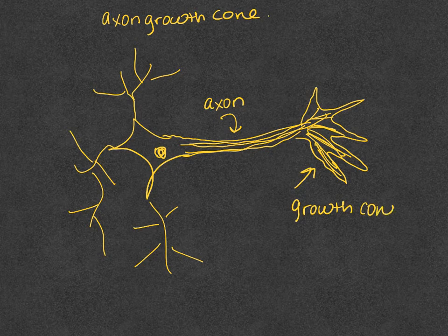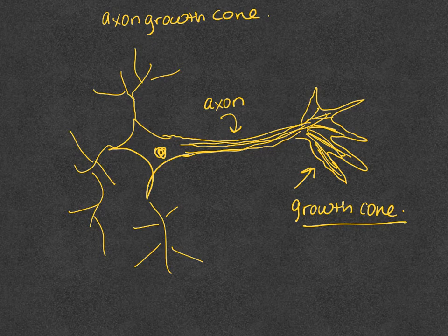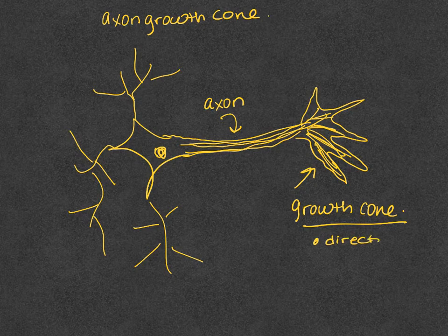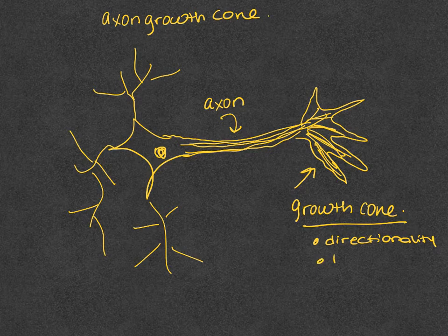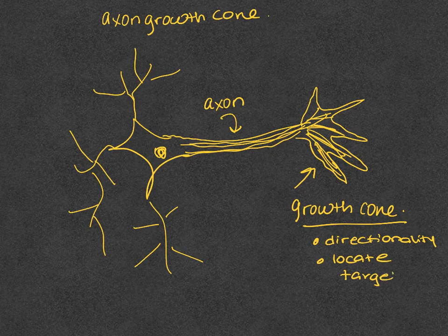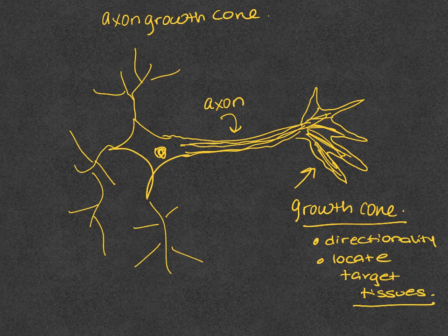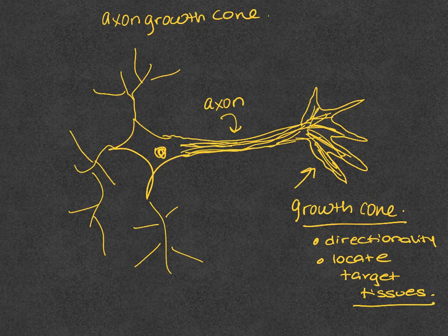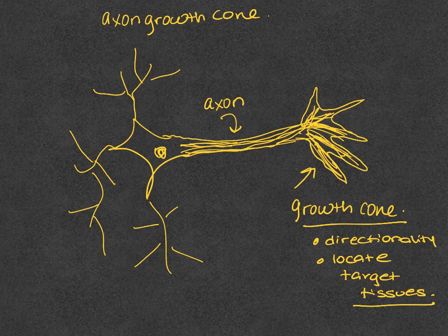And the growth cone basically serves the function in that it gives the neuronal cell directionality. And it allows it to locate target tissue. And this is determined via proteins that this growth cone comes in contact with.